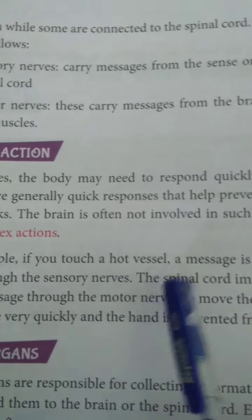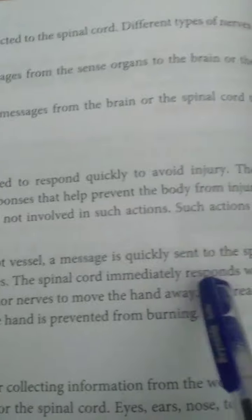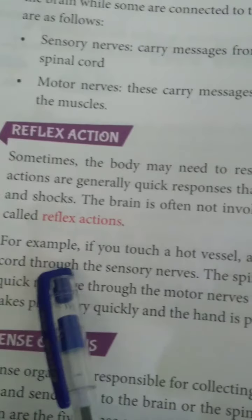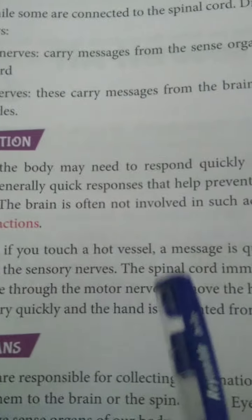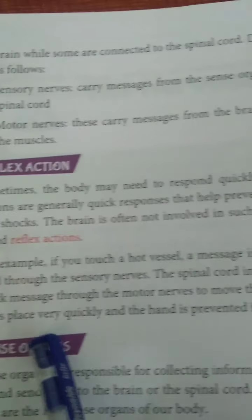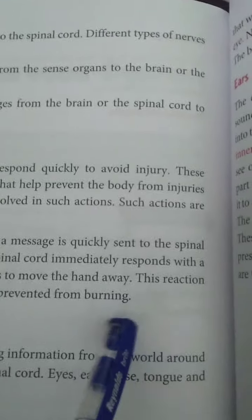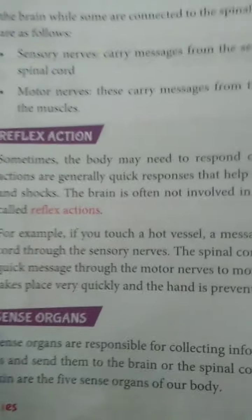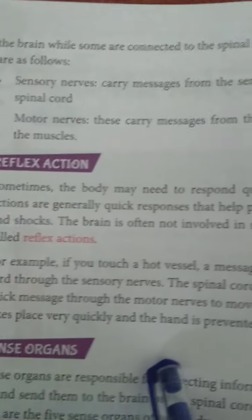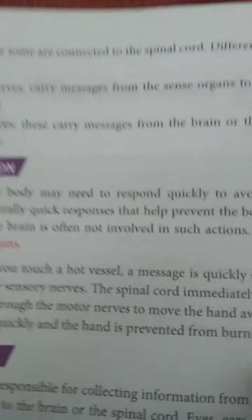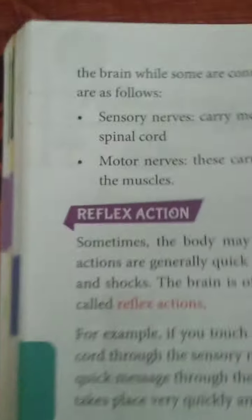For example, if you touch a hot vessel, a message is quickly sent to the spinal cord through the sensory nerves. The spinal cord immediately responds with a quick message through the motor nerves to move the hand away. This reaction takes place very quickly and the hand is prevented from burning.